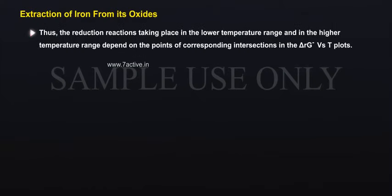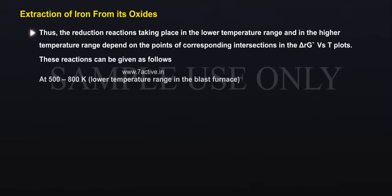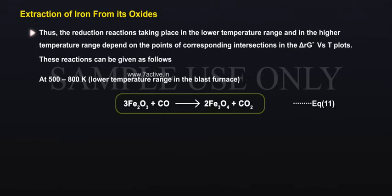The reduction reactions taking place in the lower temperature range and in the higher temperature range depend on the points of corresponding intersections in the ΔRG versus T plots. These reactions can be given as follows. At 500 to 800 Kelvin, the lower temperature range in the blast furnace: 3Fe₂O₃ + CO gives 2Fe₃O₄ + CO₂. (Equation 11)